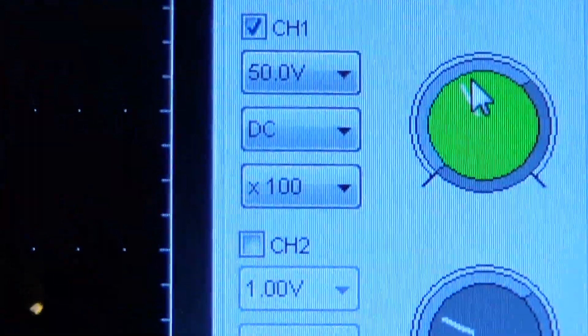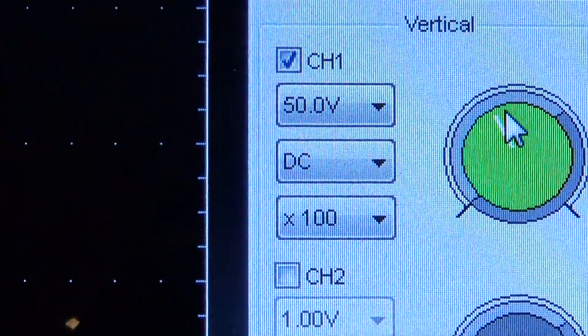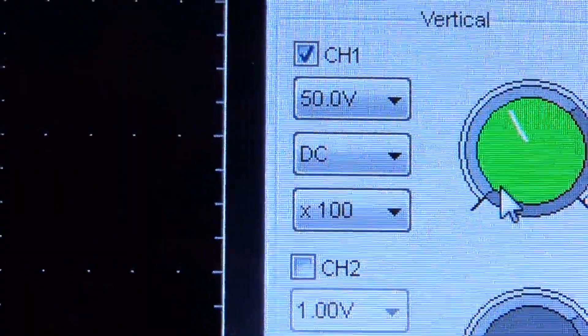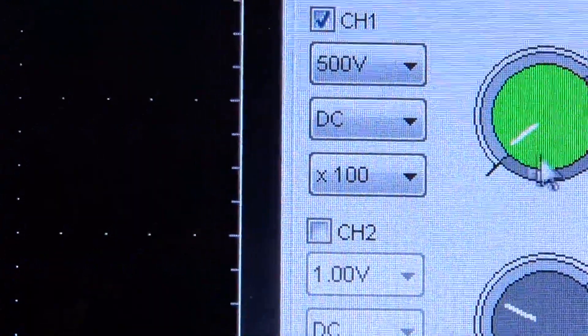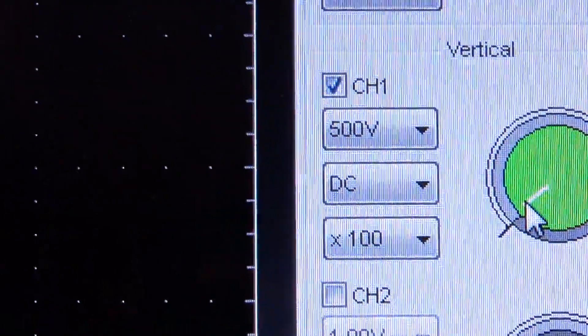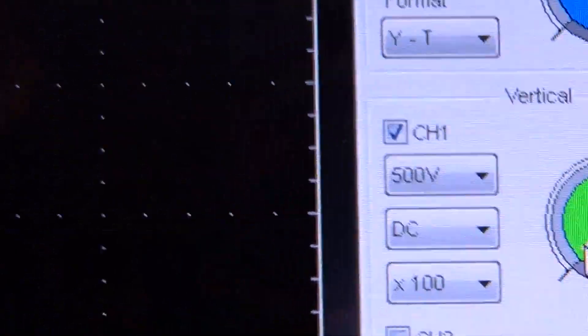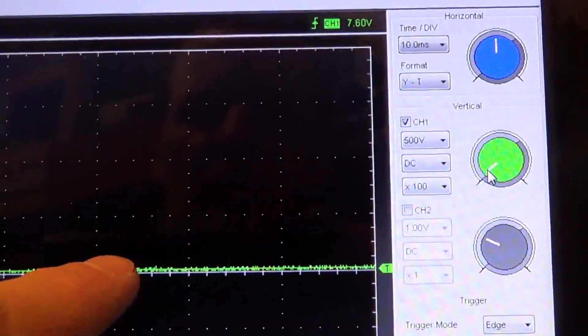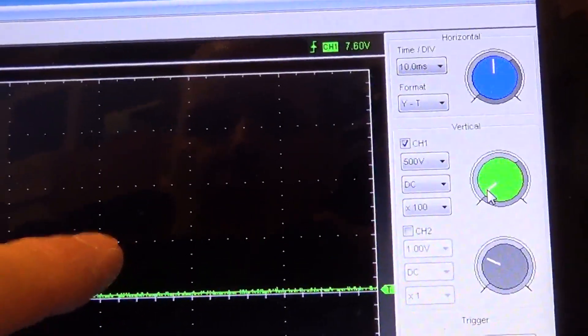I have the scope here hooked up, and if you look at the times, that's the times 100. I'll bring this to the highest point here, so that's a 500 volt scale which is the maximum this can go with the probe. So every square here is the equivalent of 500 volts.